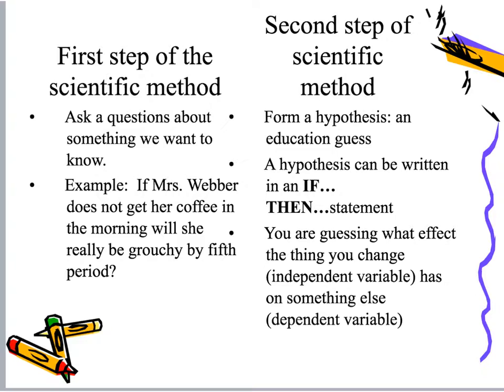Now that we have the independent and dependent variable under our belt, let's go through the scientific method. The very first step is to ask a question. That is why it is so important in science for us to be curious. We ask: what is the cause of something? Why is the sky blue? What causes earthquakes? Why is global climate change taking place? Will we ever run out of food? How do things change over time? These are all questions we can ask to figure out the cause of an actual effect.